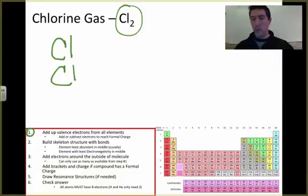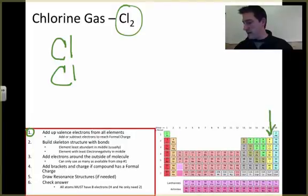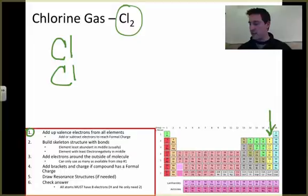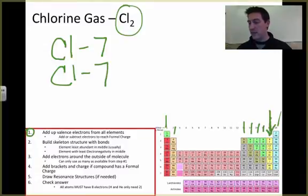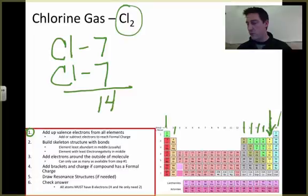Chlorine is over here in group 17, and group 17 has seven valence electrons. That chlorine brings seven electrons, this chlorine brings seven electrons. When I add them up for step one, that gives me a total of 14 electrons to build my structure.